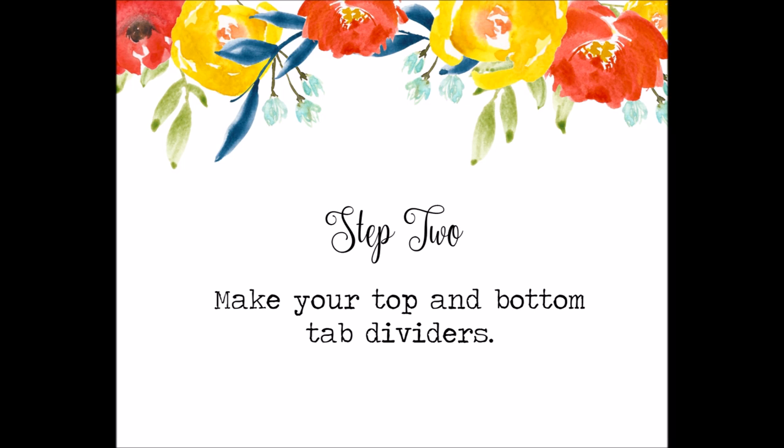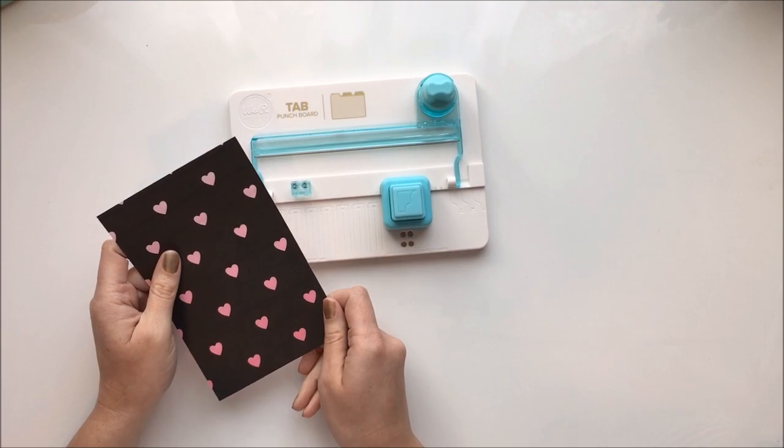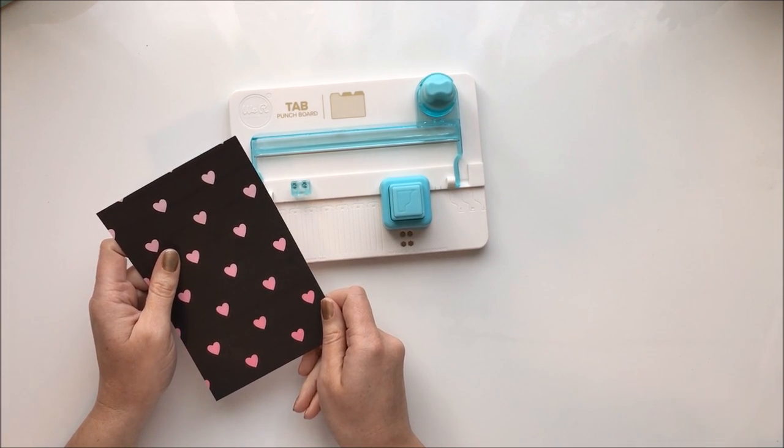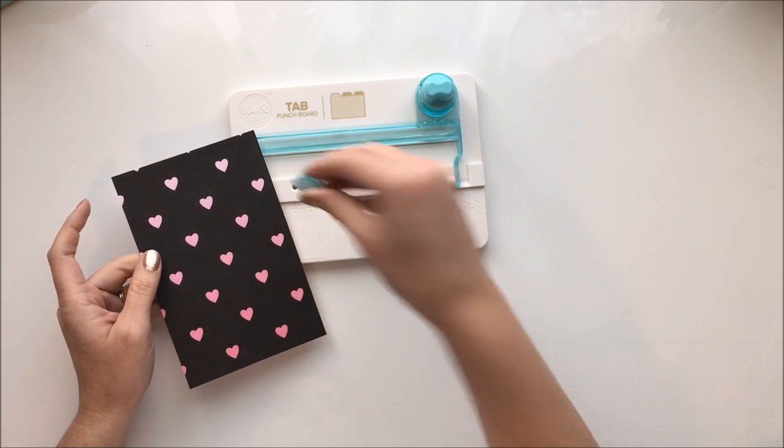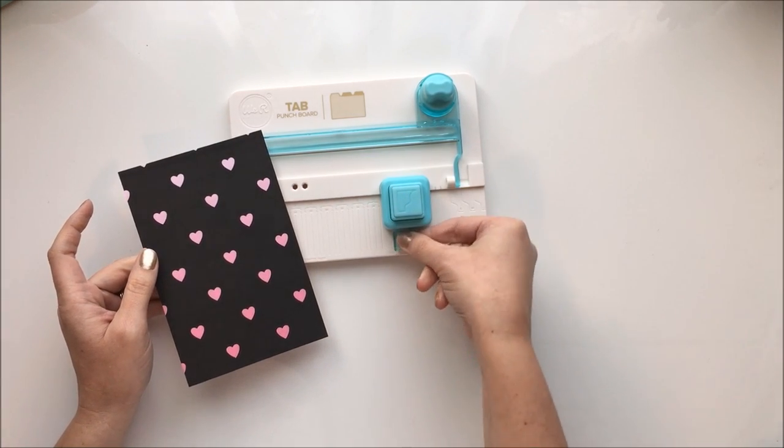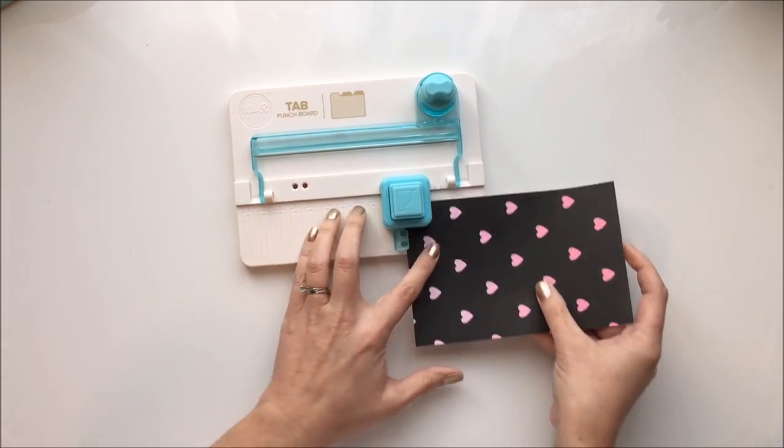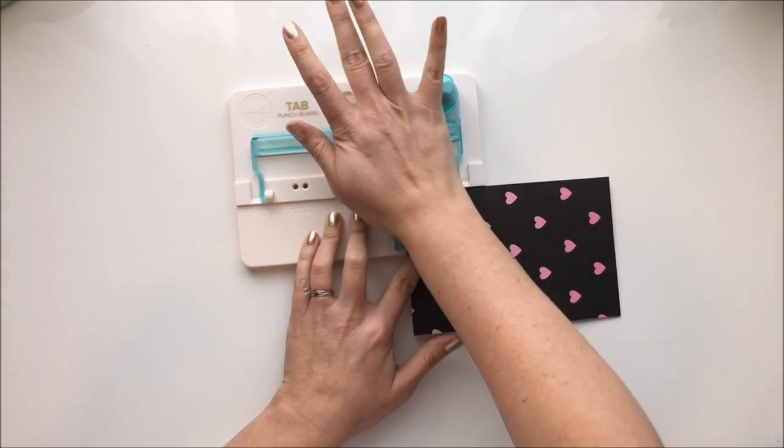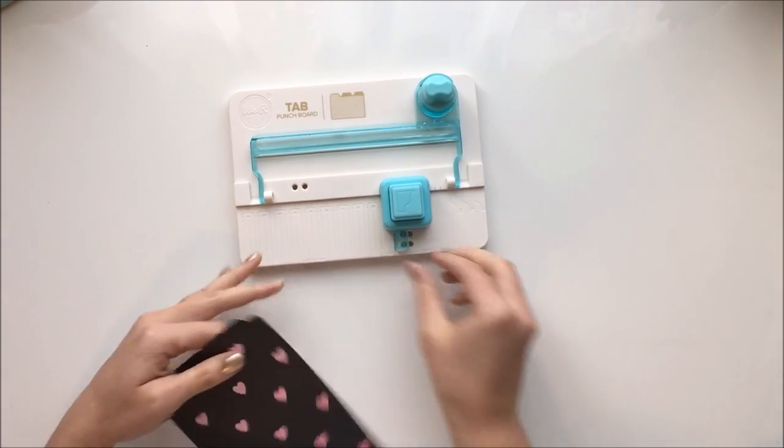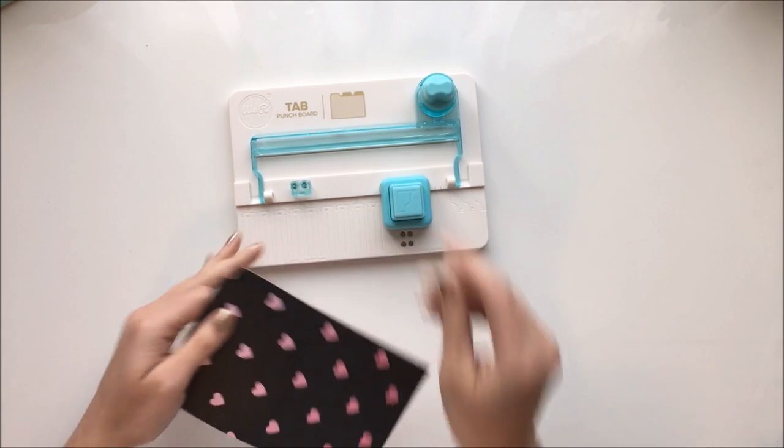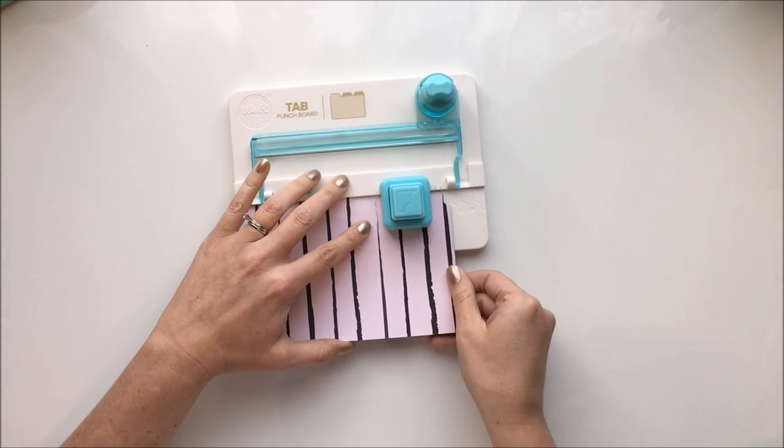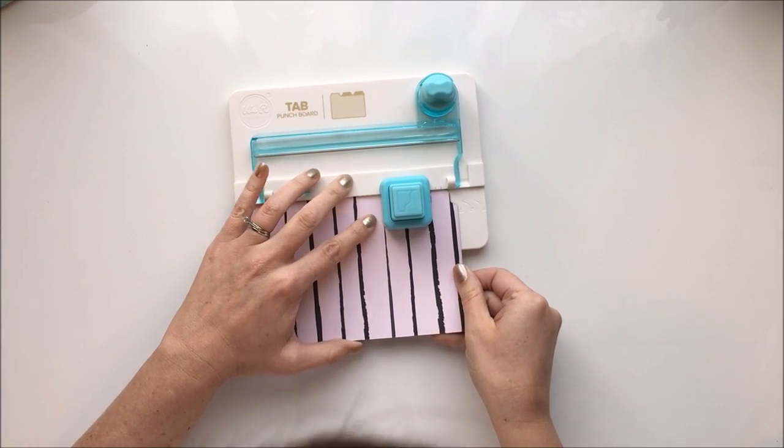Step two is make your top and bottom dividers. You get your tool out and you're going to first take the tab alignment piece, the tab alignment bar, and you're going to put it in the slot that allows you to punch the edge and you get that cool file folder shape. Then you flip it over and you line it up with the grooves to the right of the punch that say small tab.